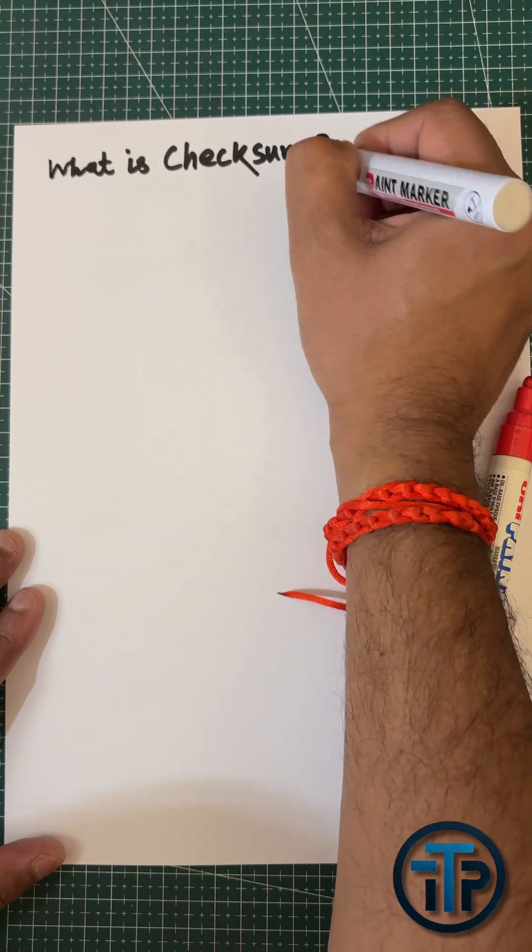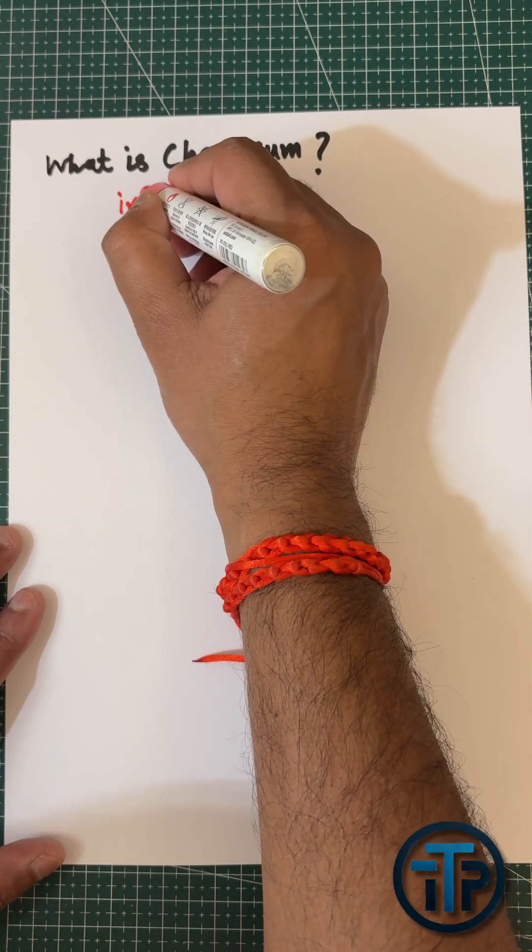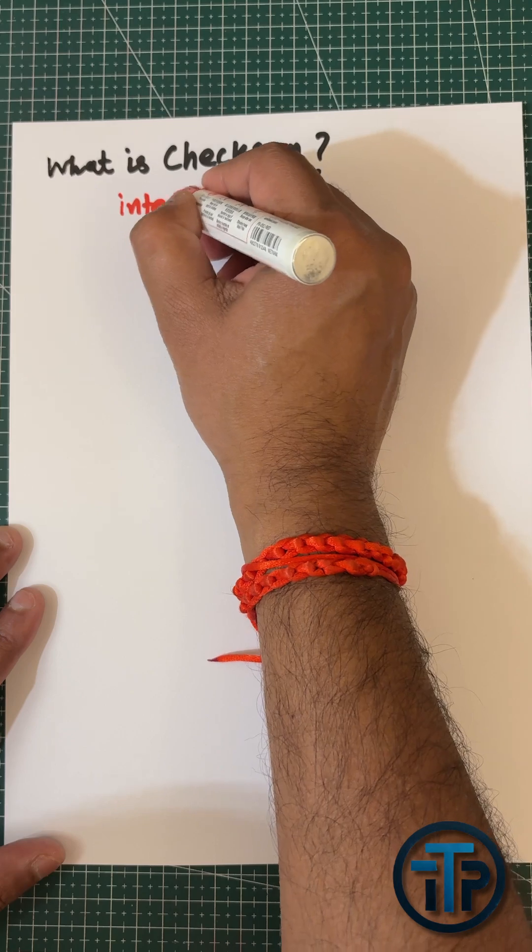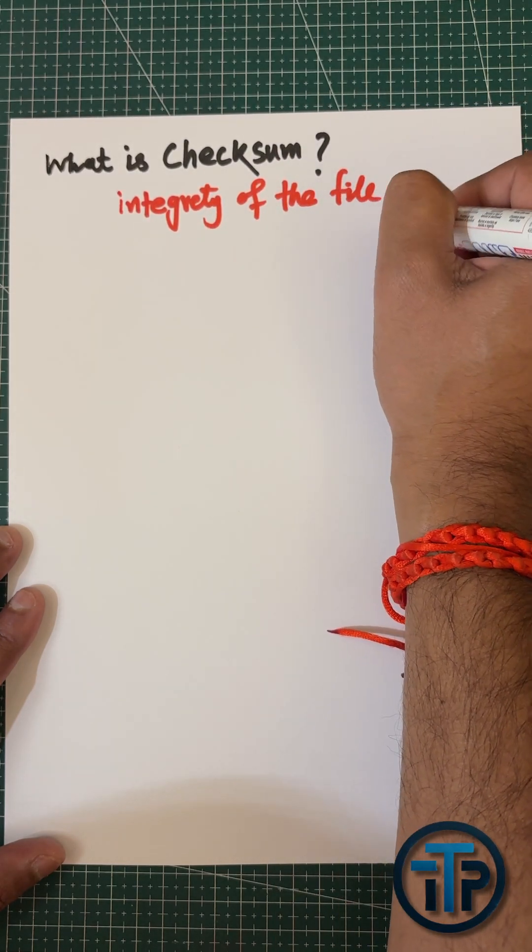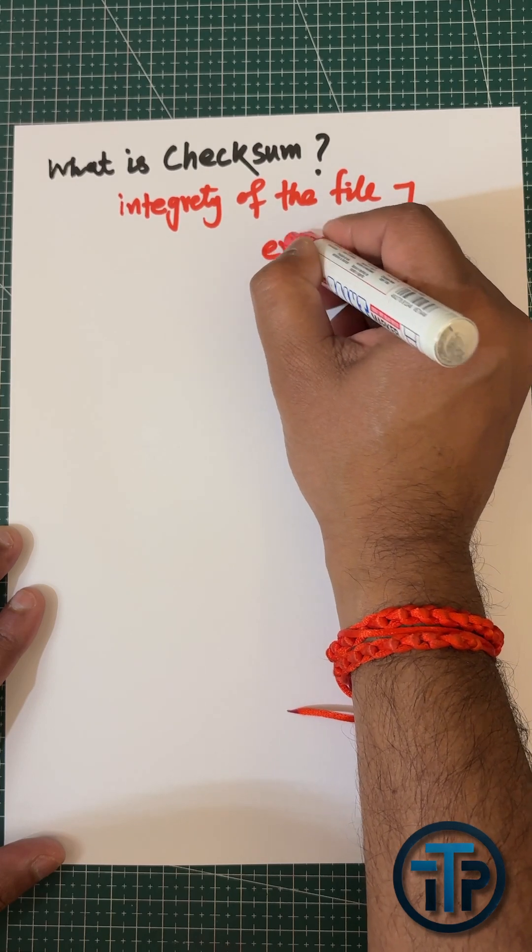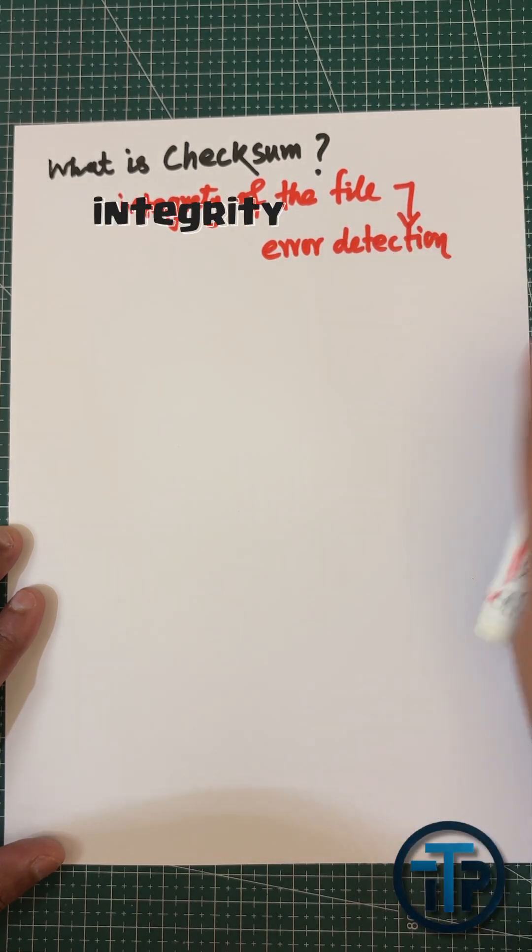Okay, so what is the checksum? Checksum is actually used to find out the integrity of any file. It is mainly an error detection code, and when the file size is too large, checksum is widely used.